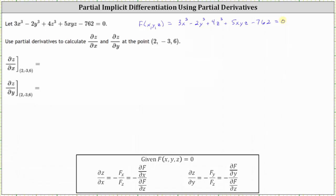Now let's work on determining the partial of z with respect to x. This is equal to the opposite of the partial of F with respect to x divided by the partial of F with respect to z. To find the partial of F with respect to x, we differentiate F with respect to x, treating both y and z as constants.